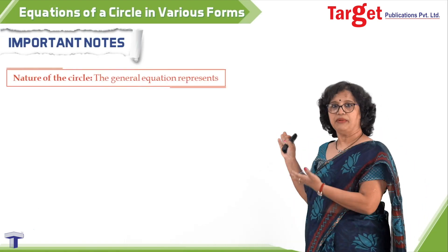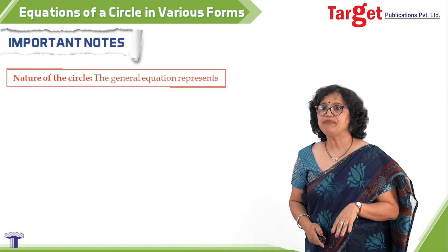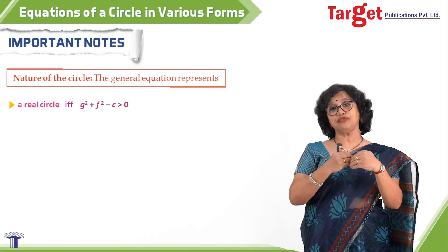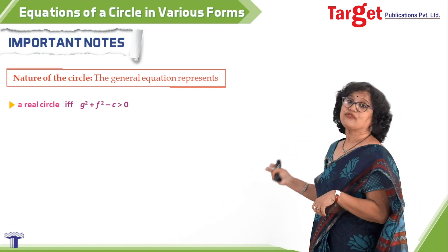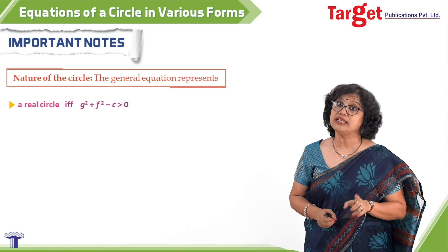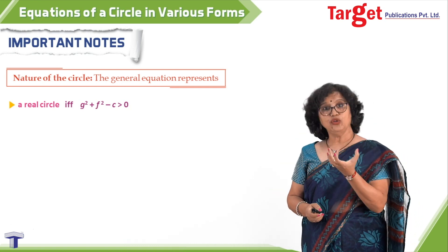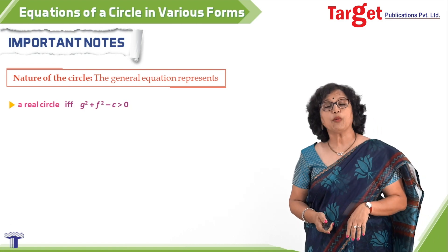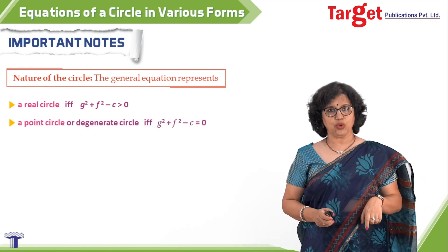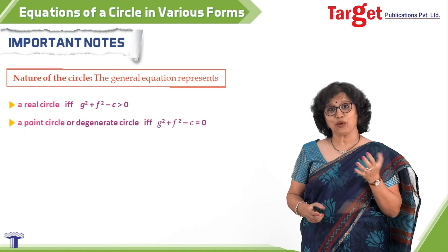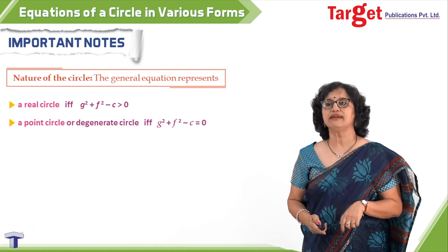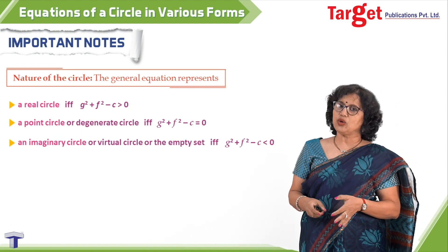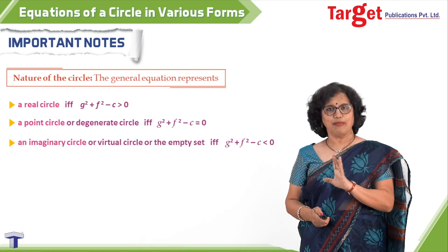More important notes on the nature of the circle using the general equation: if g² + f² − c > 0, the radius is real and you get a real circle. If g² + f² − c = 0, the radius is zero — a point circle. If g² + f² − c < 0, no such circle exists and we call it an imaginary circle.